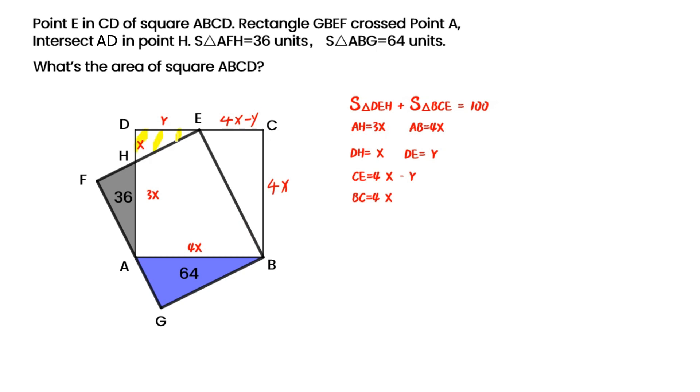Because triangle DEH similar to triangle CEB, so we can get equation for X and Y. After simplified, we get 2 times X minus Y squared equals to 0. So we get Y equals to 2 times X. So DE is 2 times X.